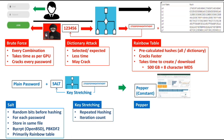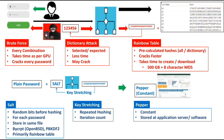Key stretching involves repeated hashing — it is essentially an iteration count, meaning the same hashing process is repeated a number of times. Pepper is a constant value stored at the application server or inside the code of the software.